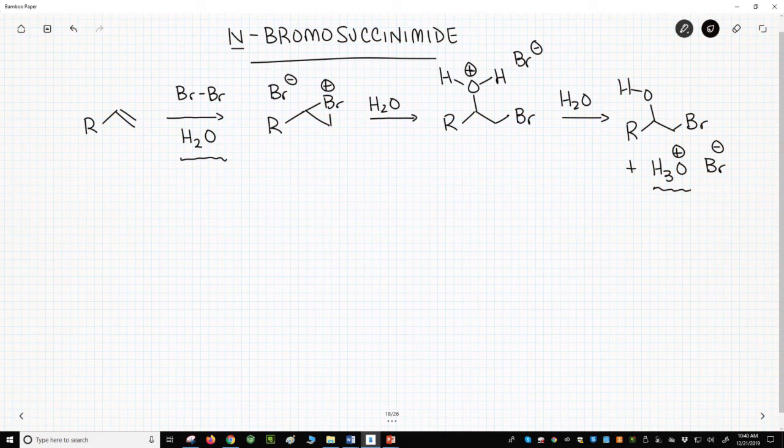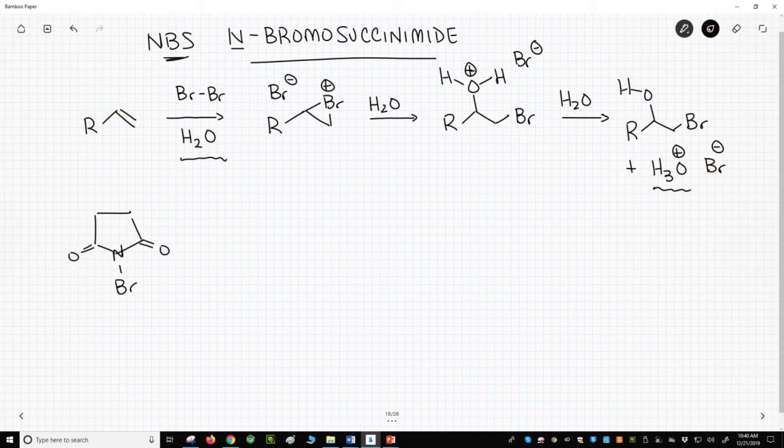To address these problems, chemists sometimes use a different reagent for making bromohydrins. That reagent is N-bromosuccinimide, the title of our slide, sometimes abbreviated as NBS. Here is the structure of NBS.